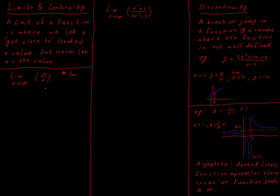Continuing our work with limits and continuity, we're going to look at limits where x is not tending towards a particular number — it's tending towards infinity. You have already dealt with situations where we have something tending to infinity when we were talking about the sum to infinity of a series of terms. So you've already touched upon this concept before, but we're going to discuss the method for it again.